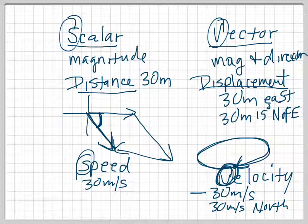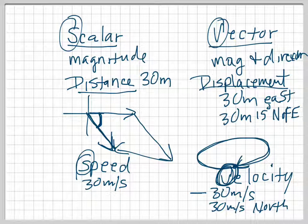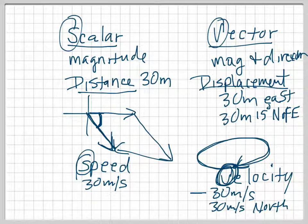You need a direction with the magnitude if you're going to have a vector quantity. So when I ask you to calculate a vector, remember that I'm actually asking you to calculate two different things: a magnitude and a direction.